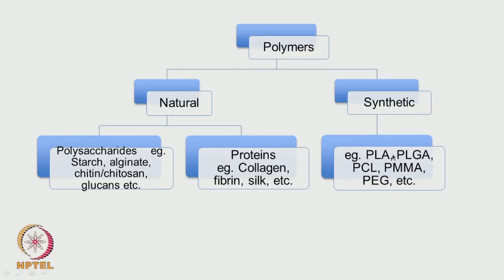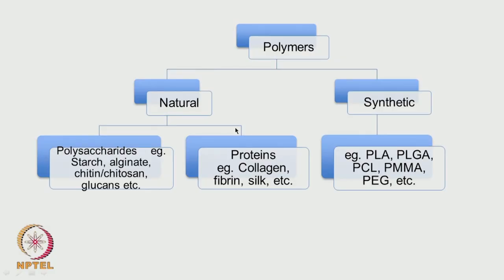So we saw this slide in the previous class. We have the natural polymers and the synthetic polymers. Synthetic polymers could be polylactic acid, polylactic glycolic acid, polycaprolactone, polymethyl methacrylate, polyethylene glycol and so on. These are all synthetic, meaning you synthesize them in the lab. Then we have the natural ones — they come from plants, bacteria, fungi, animals and so on.